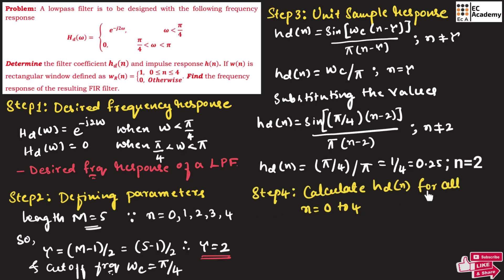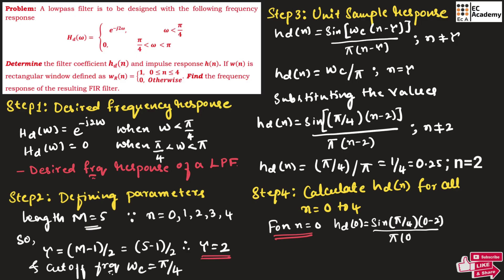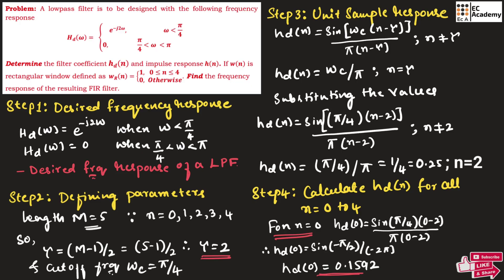Step 4 is to calculate hd of n for all values of n from 0 to 4. For n equals 0: hd of 0 equals sin(pi/4 times (0 minus 2)) divided by pi times (0 minus 2), which equals sin(pi by 2) divided by minus 2 pi. Calculating this value, hd of 0 equals 0.1592.